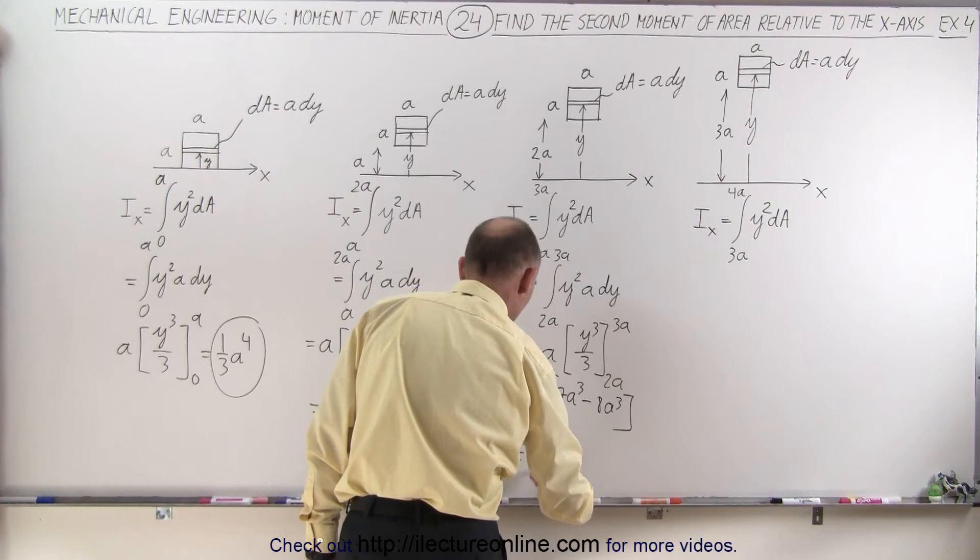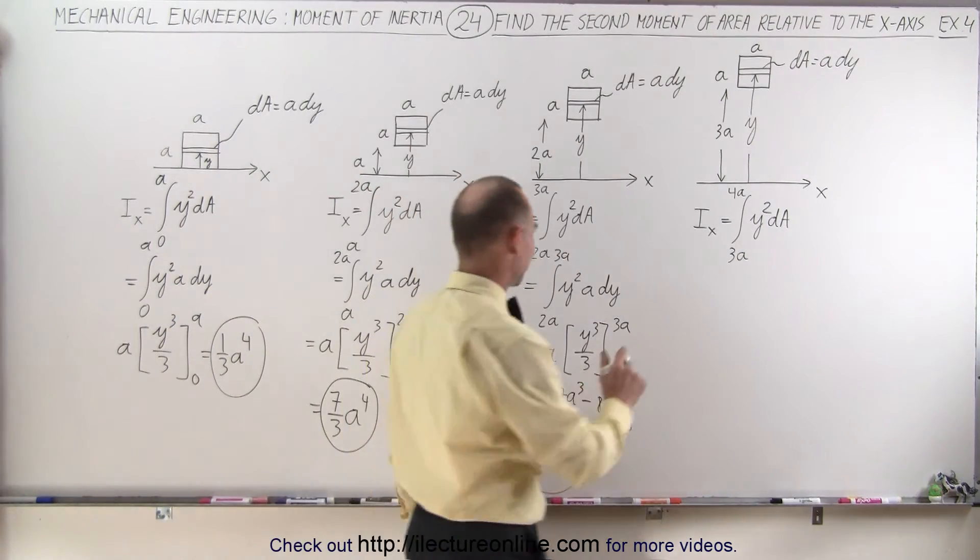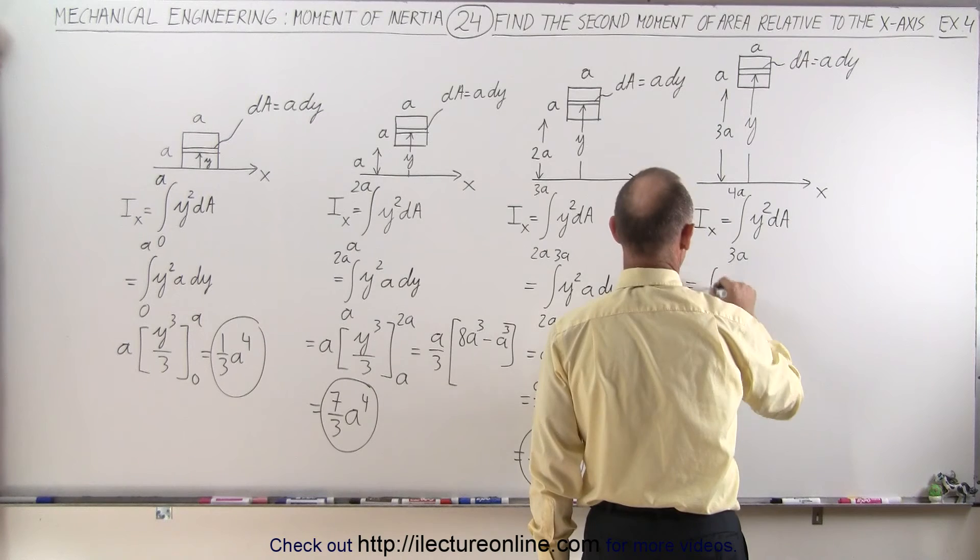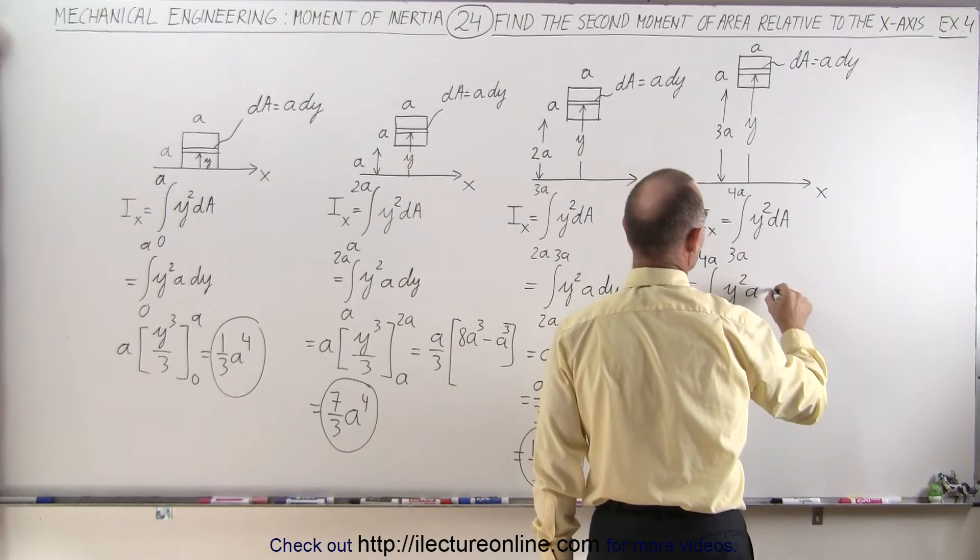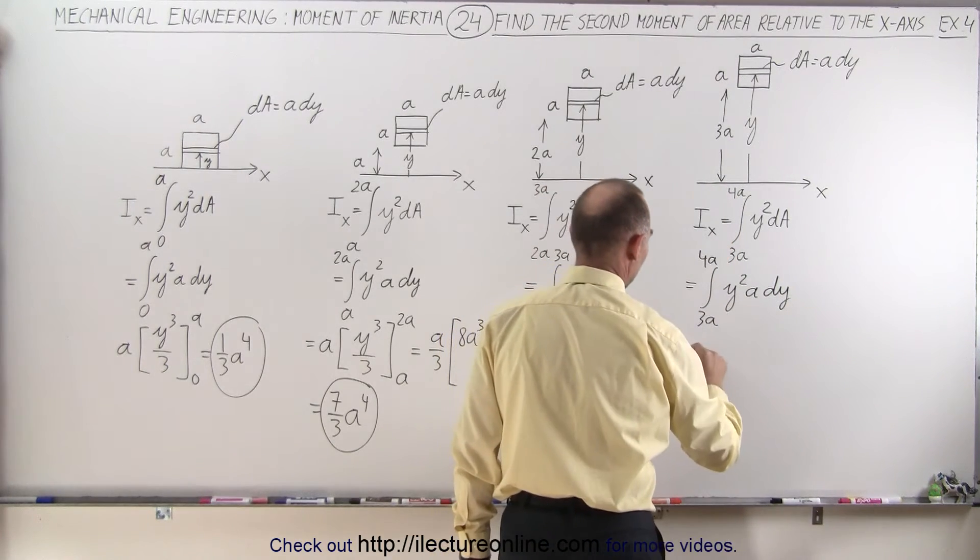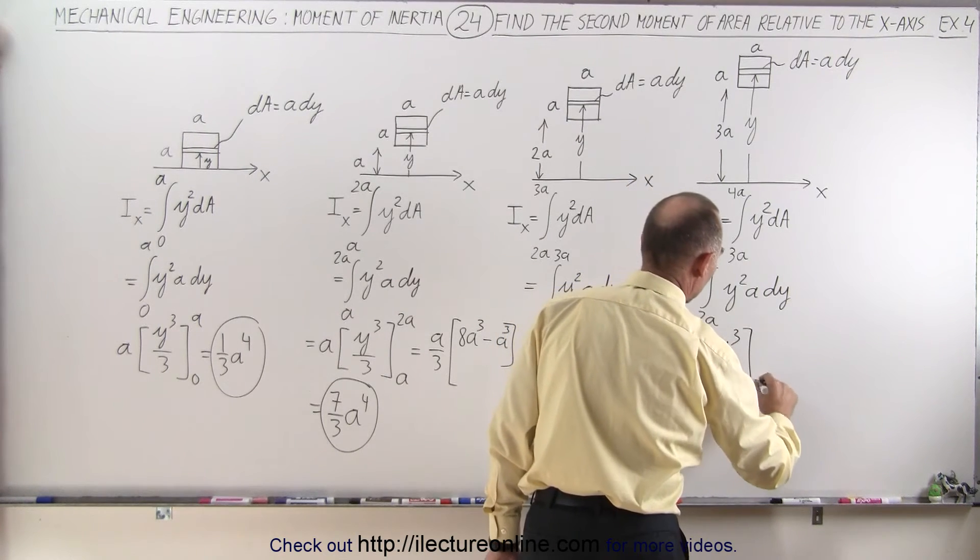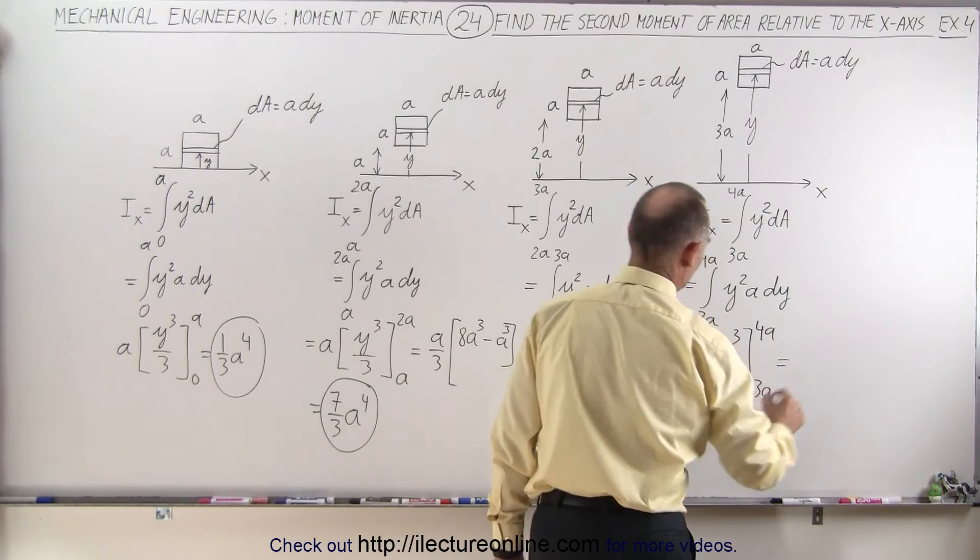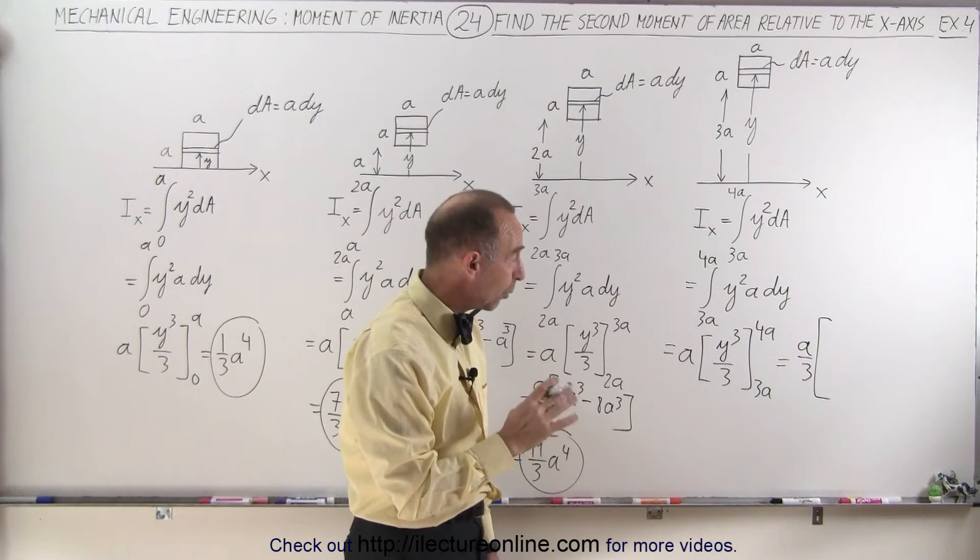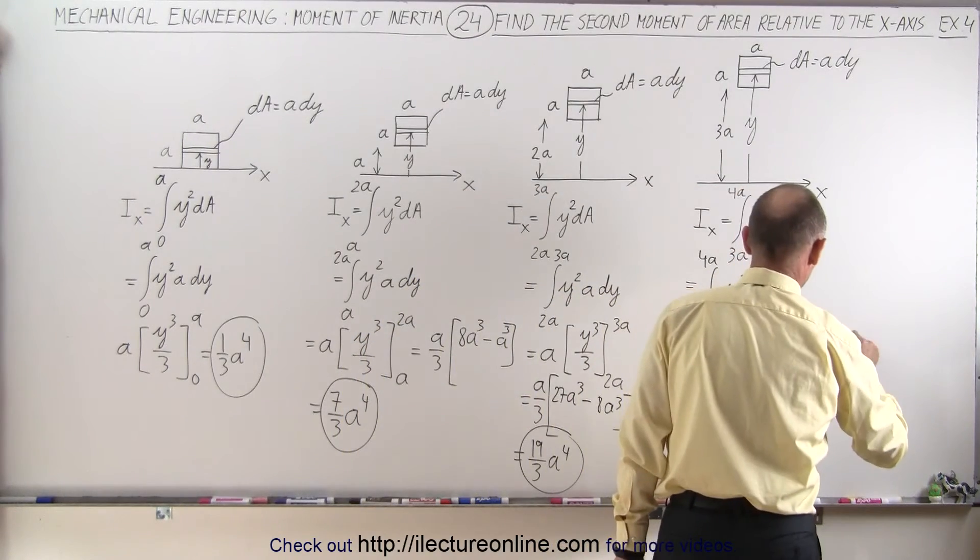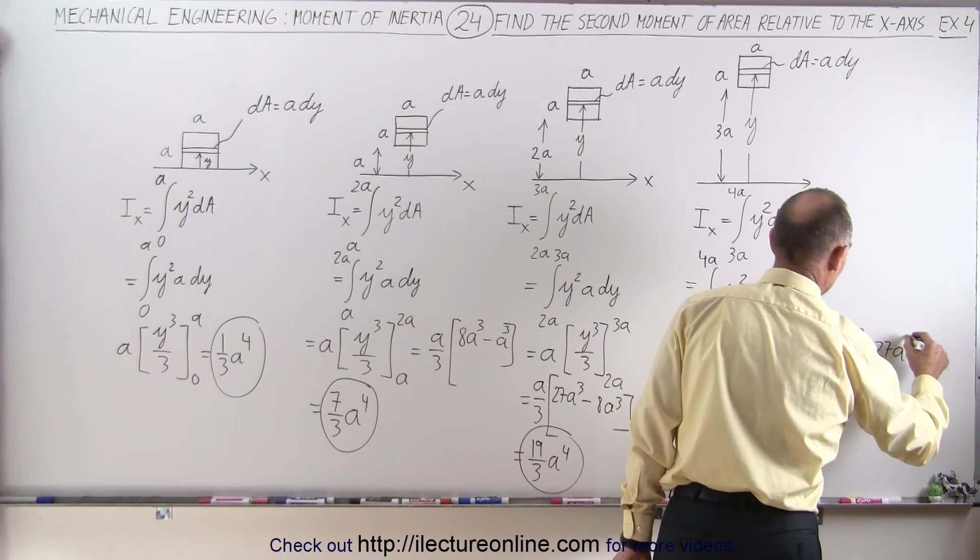And finally, for the last integral, this is equal to the integral from 3a to 4a of y squared a dy. Again the a comes outside the integral sign, so this is a times y cubed over 3, evaluated from 3a to 4a, which is equal to a over 3 times, when I plug in the upper limit, I get 4a quantity cubed, which is 64a cubed, minus the lower limit, I get 27a cubed.